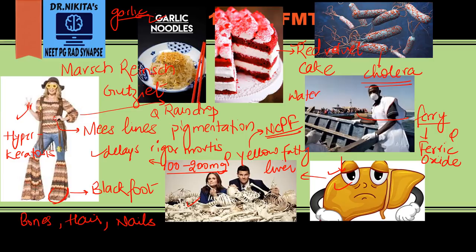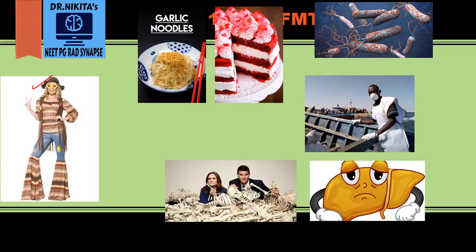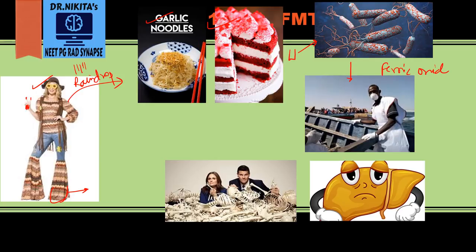Quick revision: a hippie female named Marsh Rinch Gutsy gets ready for the party — nail paint represents Mees lines, mehendi represents hyperkeratosis, black footwear represents black foot disease. There is rainfall so she gets raindrop pigmentation. At the pub she orders garlic noodles — garlic odor — and red velvet cake — red velvet mucosa. She drinks water and gets cholera. The fairy rescues her — ferric oxide is the antidote.